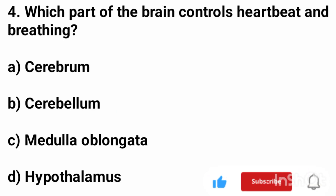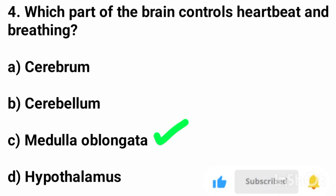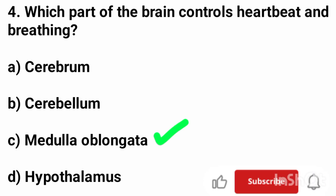Question number 4. Which part of the brain controls heartbeat and breathing? The correct answer is option C, medulla oblongata.